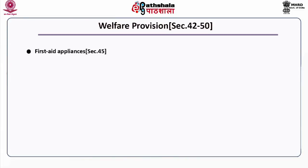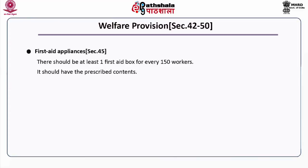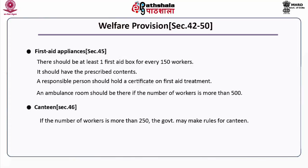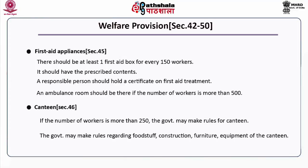Under Section 45, first aid appliances must be provided. There should be at least one first aid box for every 150 workers, with prescribed contents. A responsible person should hold a certificate in first aid treatment. An ambulance room should be available if the number of workers is more than 500. Under Section 46, canteen: if the number of workers is more than 250, the government may make rules for a canteen, including rules regarding foodstuff, construction, furniture and equipment of the canteen.